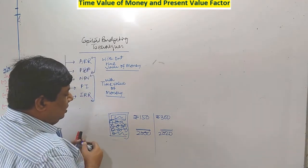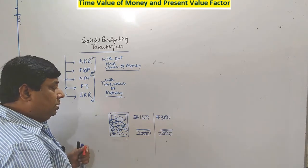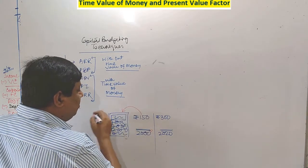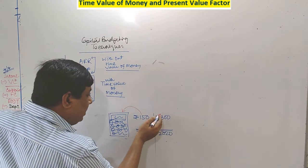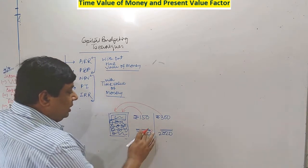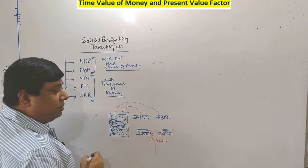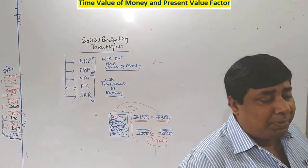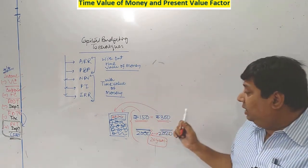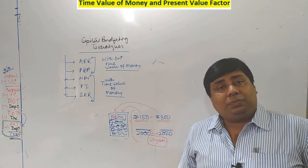How is time value of money related to this example? During the year 2000, by Rs 150, you can acquire this calculator. The same calculator for purchasing during the year 2020, you have to spend Rs 300. There is a gap of 20 years. The utility of Rs 150 in year 2000 equals the utility of Rs 300 in year 2020. This is called the impact of time value of money.